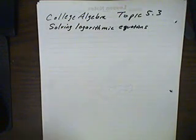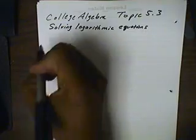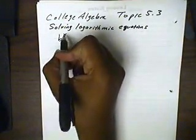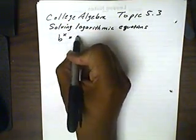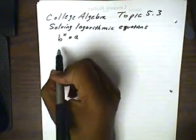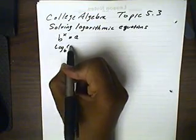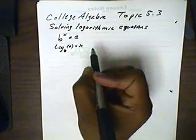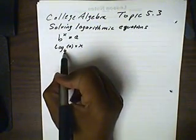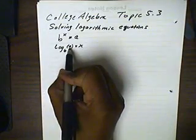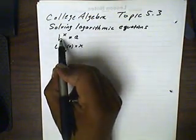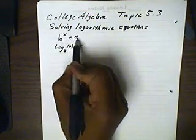We'll be solving logarithmic equations using this one property. If you have an exponential, a base raised to an exponent that equals an answer, you can write this as a logarithm, as log of the same base of the answer to equal the exponent. Or you can start off with a logarithm of base b of a equals x and convert that to base b to the x power equals a.